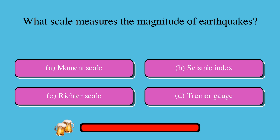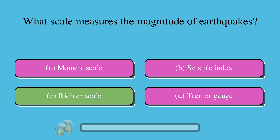What scale measures the magnitude of earthquakes? A. Moment scale, or B. Seismic Index, or C. Richter scale, or D. Tremor gauge? The correct answer is C. Richter scale.